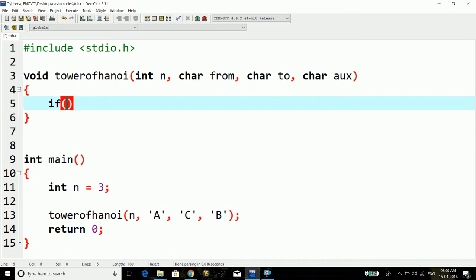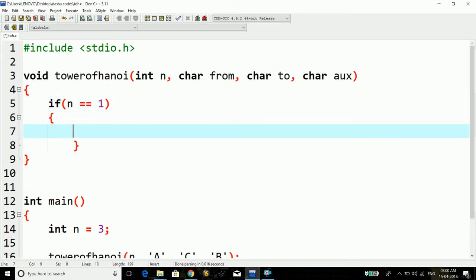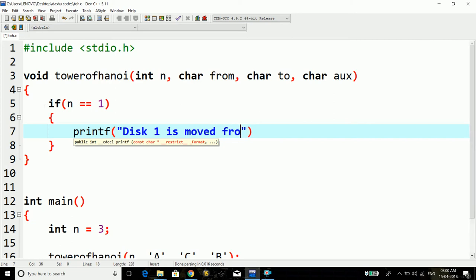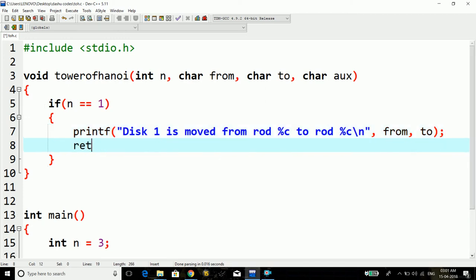Here, we first check for a condition: if n is equal to 1. Then, what we do is print down a message that disk 1 is moved from rod %c to rod %c and new line. The values will be from and to, and return.